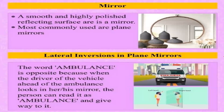A smooth and highly polished reflecting surface is a mirror. Most commonly used mirrors are plain mirrors, that's why we also use spherical mirrors. In a plain mirror, there is a lateral inversion. If you have an ambulance, you can see a mirror image — left to right, right to left — that's lateral inversion.